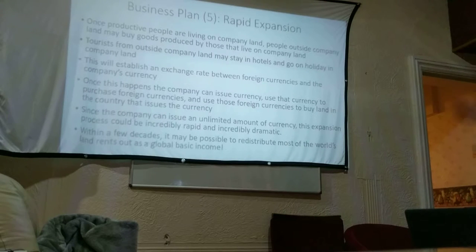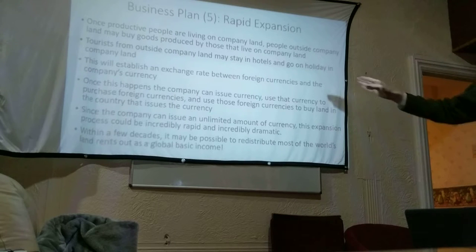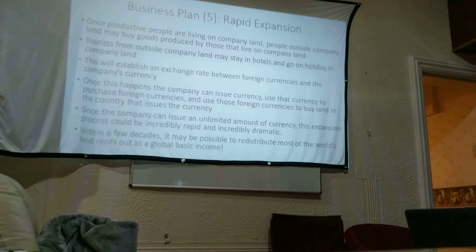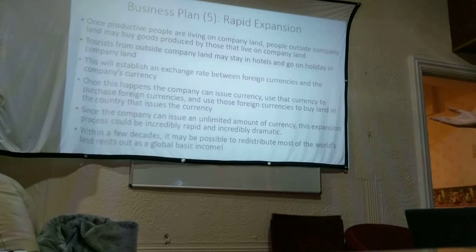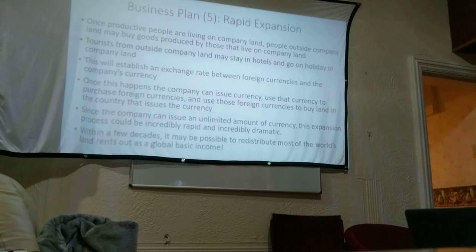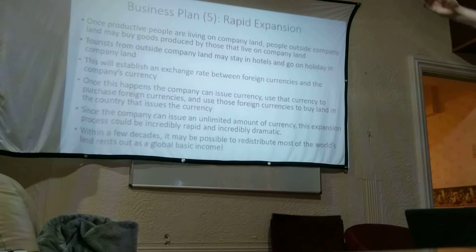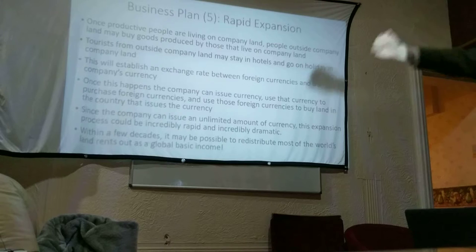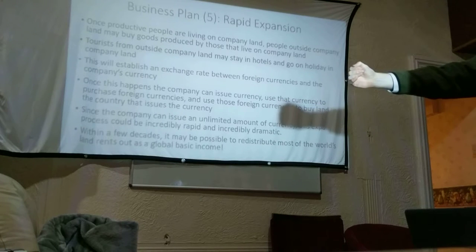Once this happens, the company can issue currency and use that currency to purchase foreign currencies. And use those foreign currencies to buy land in the country that issues the currency. So if there's an exchange rate between Social Solutions tokens and dollars, then the company can issue Social Solutions tokens out of thin air, use that to buy dollars, and then use those dollars to purchase land in the United States.